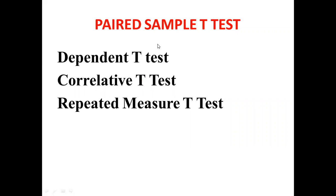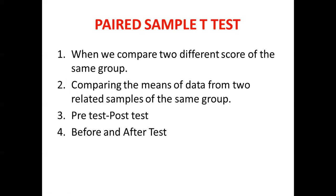The paired sample t-test is known by several different names. Someone may call it the dependent t-test, some may call it the correlative t-test, and some may call it the repeated measures t-test. These are all the same test — just different names for the paired samples t-test.